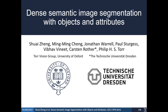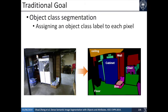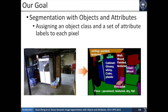This is a spotlight video for our CVPR 2014 paper, dense semantic image segmentation with objects and attributes. Traditional semantic image segmentation focuses on assigning an object class label to each pixel. We consider a new problem: each pixel in an image can be associated with both an object class and a set of visual attributes labels.